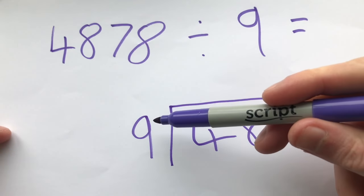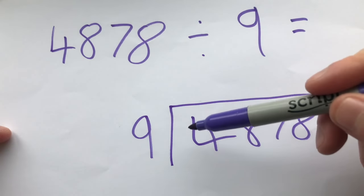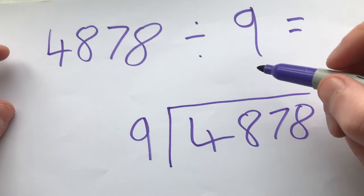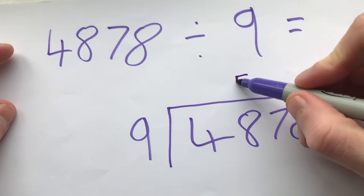How many nines going to 48? So if you use your times tables, it'll tell us that there are five nines that fit in. Because five nines are 45. We can't fit any more in there, so we'll put five up there for now.